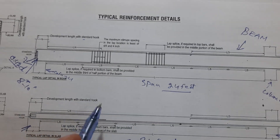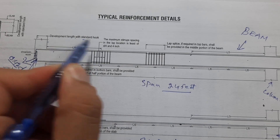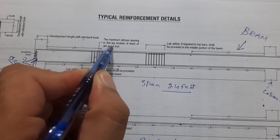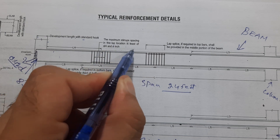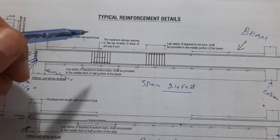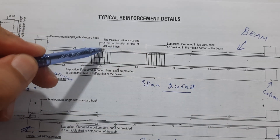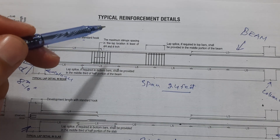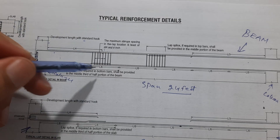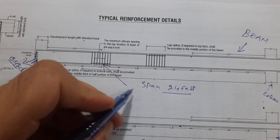The maximum stirrup spacing in the lap location is the least of d/4 and 4 inches. You can keep it up to 4 inches, or the least dimension of the member. They have already provided the lapping here — look at this.